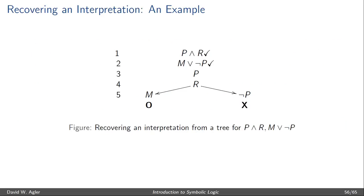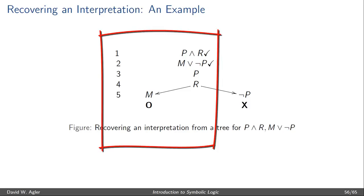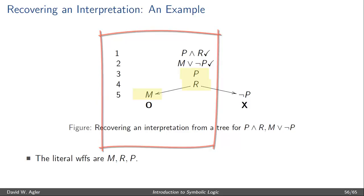So let's look at an example of this. Suppose we have the following tree. We have two formulas to start, and those formulas are decomposed at lines 3, 4, and 5. Once we've fully decomposed the tree, we see that one of the branches is a completed open branch — a branch where all the propositions that can be decomposed have been decomposed, and there's not a proposition P and its literal negation not-P found in the branch. The literal well-formed formulas in this open branch are M, R, and P.